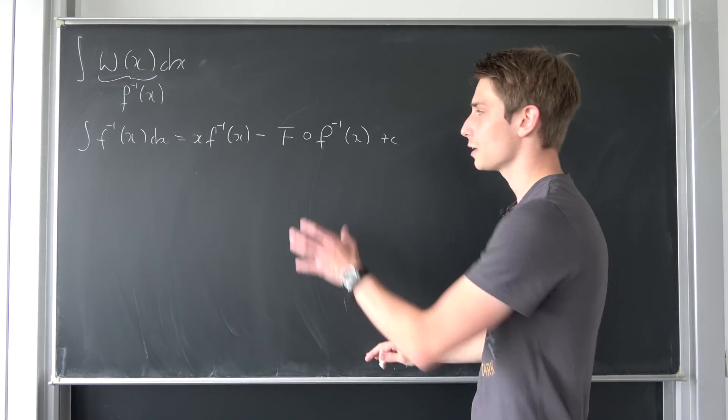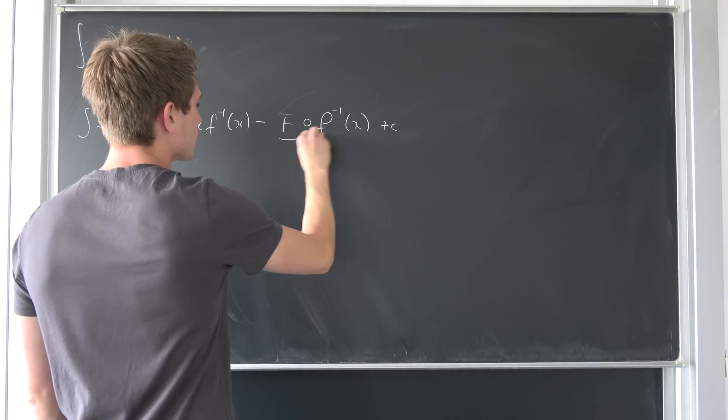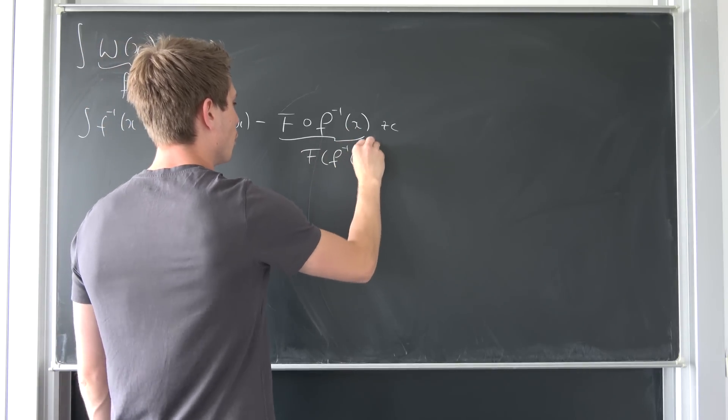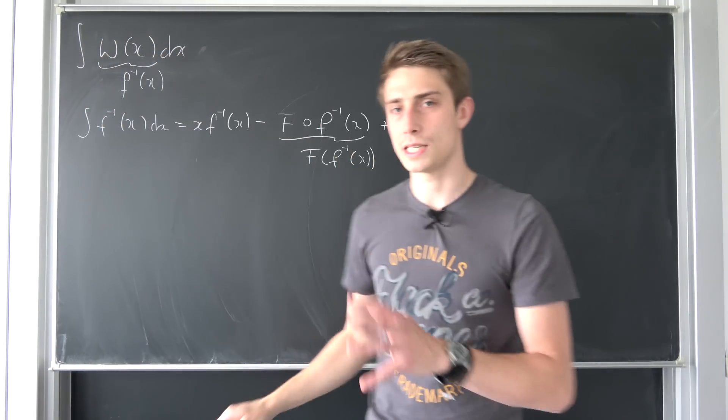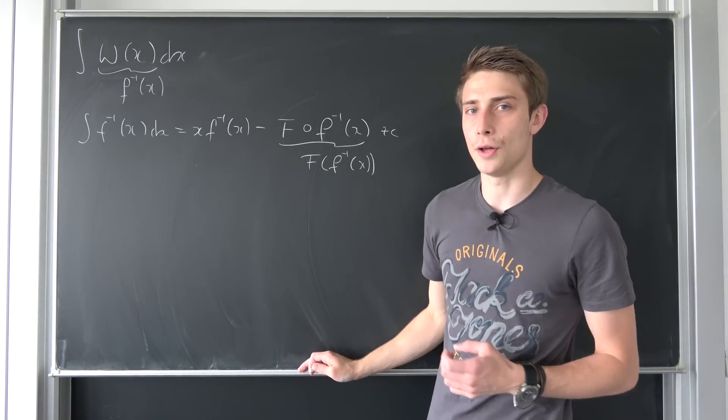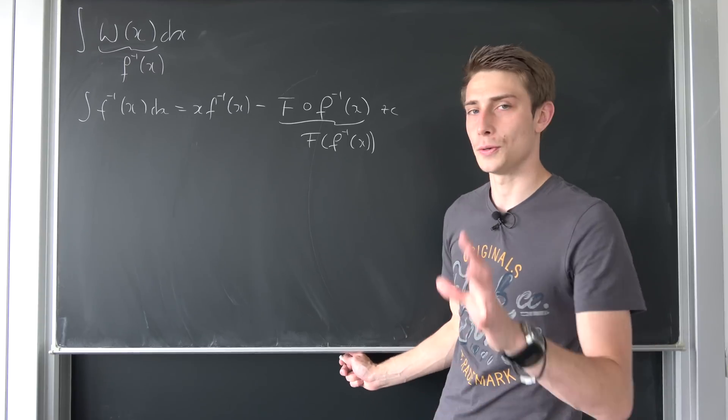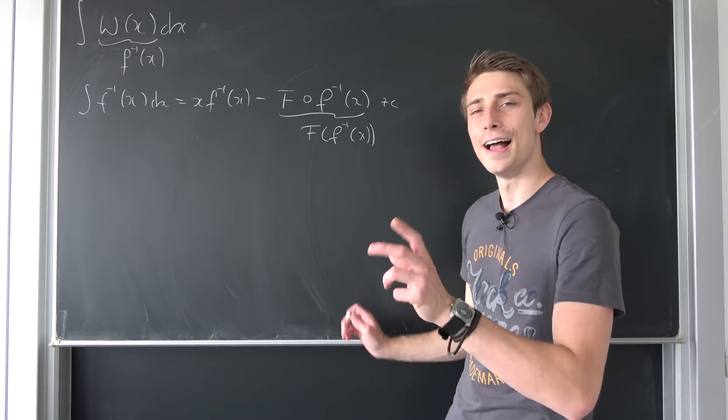So this might sound quite confusing. You can interpret this thing right here as just f of f to the minus 1 of x. You will see in a second why this thing right here is useful and how we can use it.